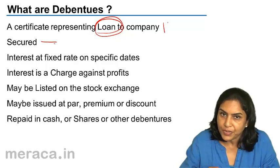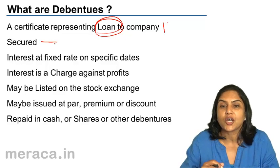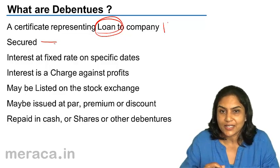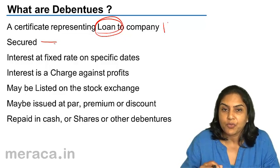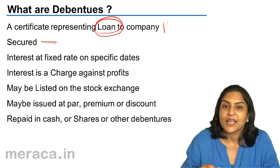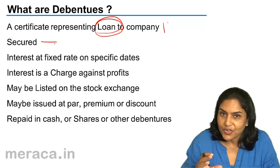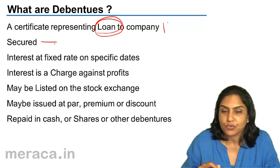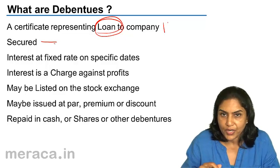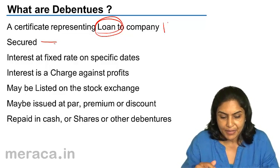This is a specific charge since there is a specific asset held as security against the debentures issued. But usually debentures are secured by a general charge on all the assets of the company. So if the company were to be wound up, what is realized from the sale of assets would be first paid to the debenture holders before paying other outside liabilities.